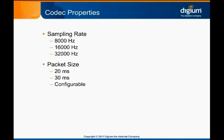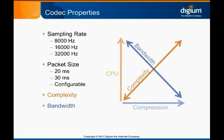Two of the most important features of any codec are its complexity and its bandwidth consumption. They're mentioned together because they're often inversely related. The more complex a codec is, the more computational power it requires to translate audio to or from that format. More computational power means longer delay and fewer simultaneous calls per processor. However, more complex encoding algorithms often compress audio more efficiently, so that each frame uses less disk or network capacity.